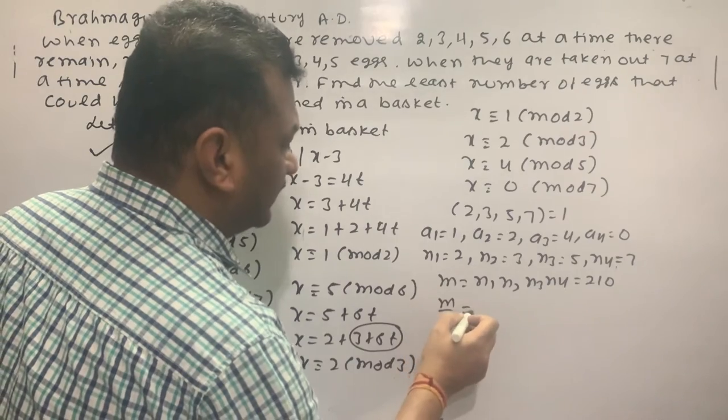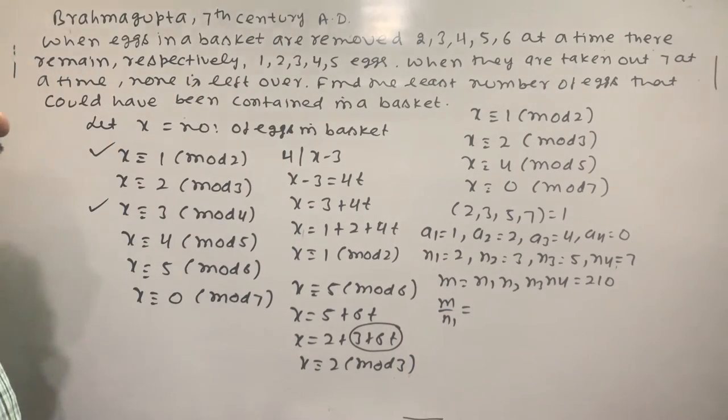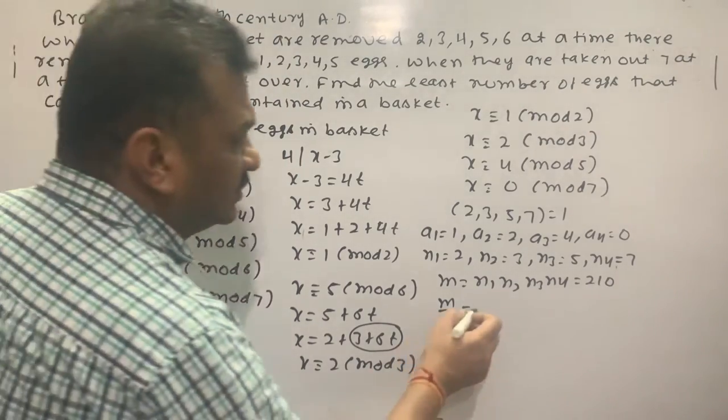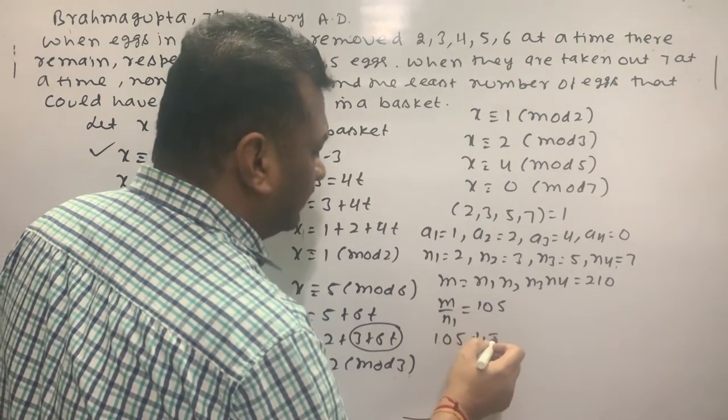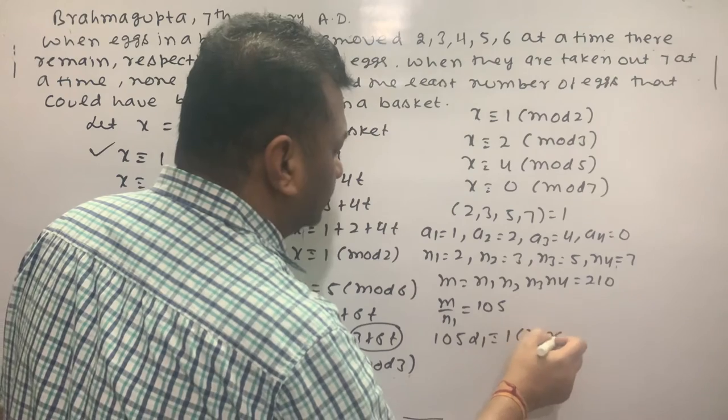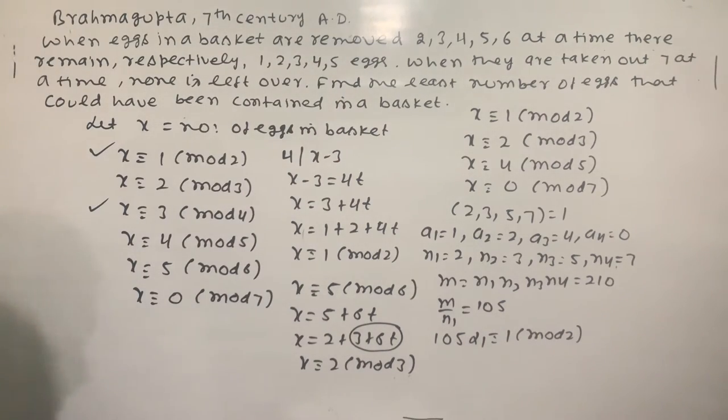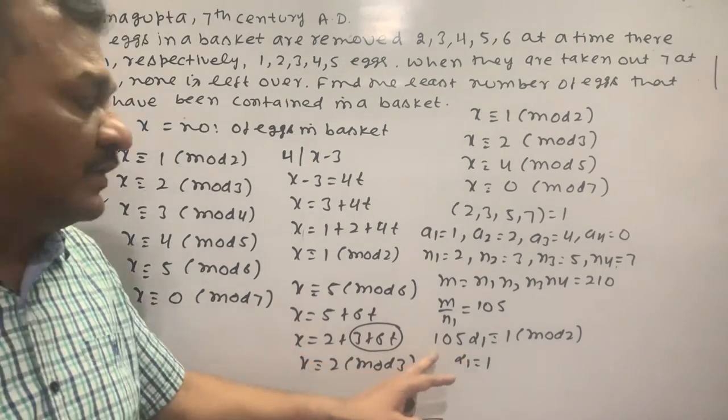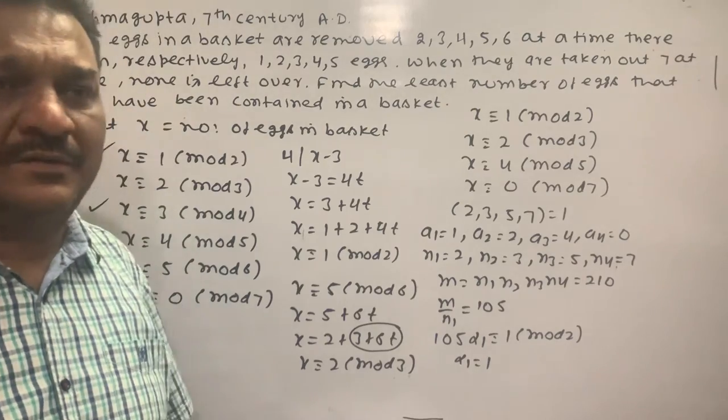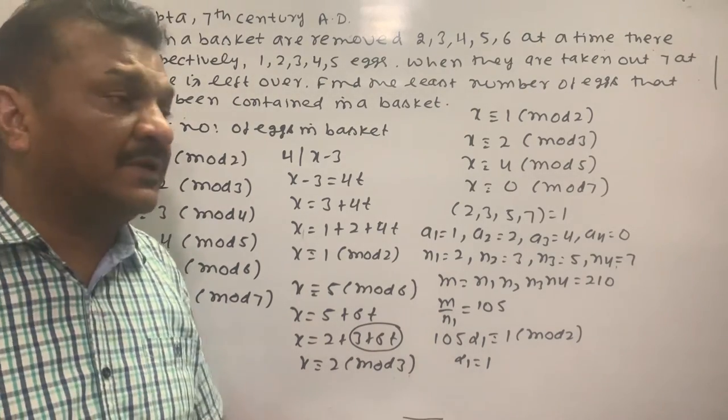Now first, M upon N1, 210 by 2, is 105. So our condition is 105 times alpha1 ≡ 1 (mod 2). When I take 1, 105 divided by 2, so alpha1 value is 1.